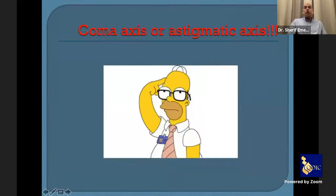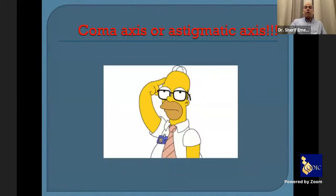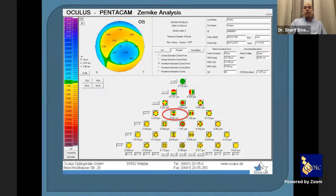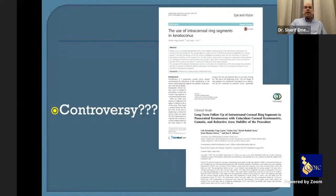This raises the discussion of which axis to follow. We actually have three axes: the topographic axis, the refractive axis, and the coma axis. Coma aberration is one of the most common aberrations in keratoconus patients. This is a controversial subject — till now, nobody can be certain which axis is the perfect choice.